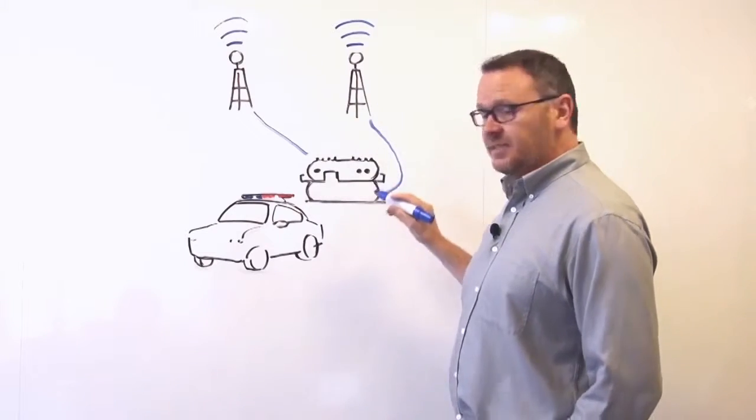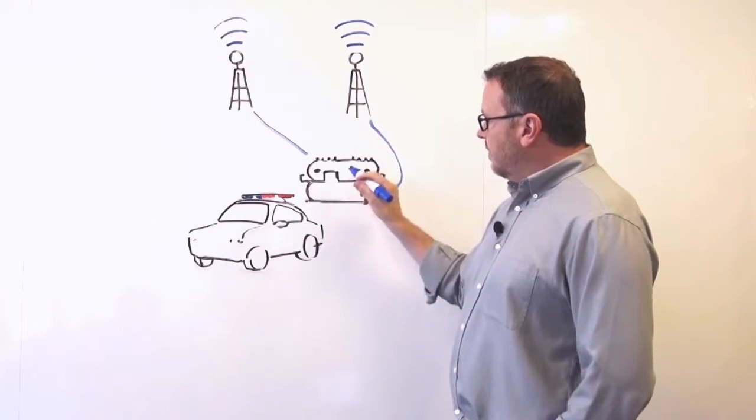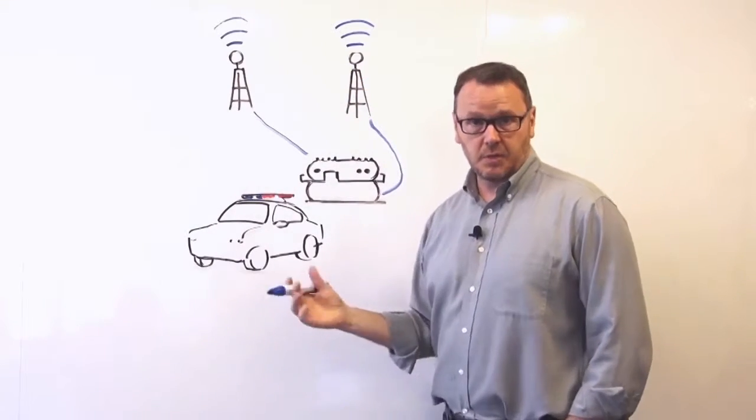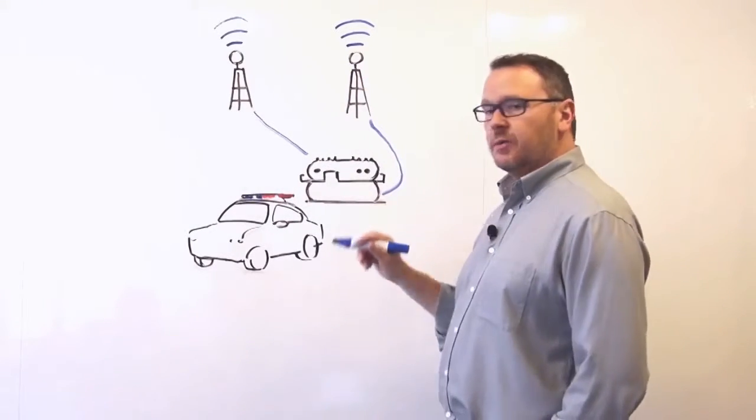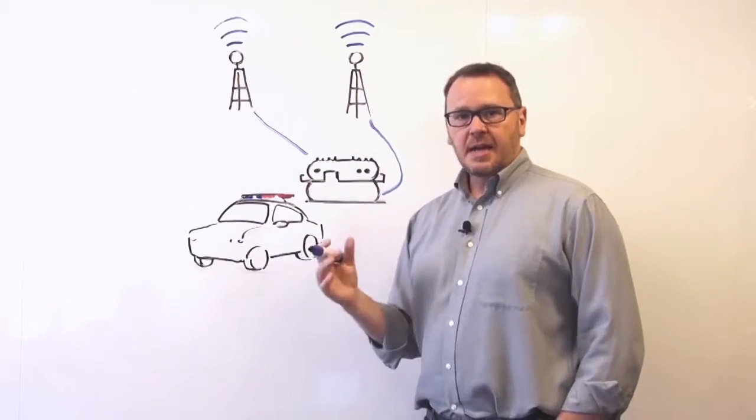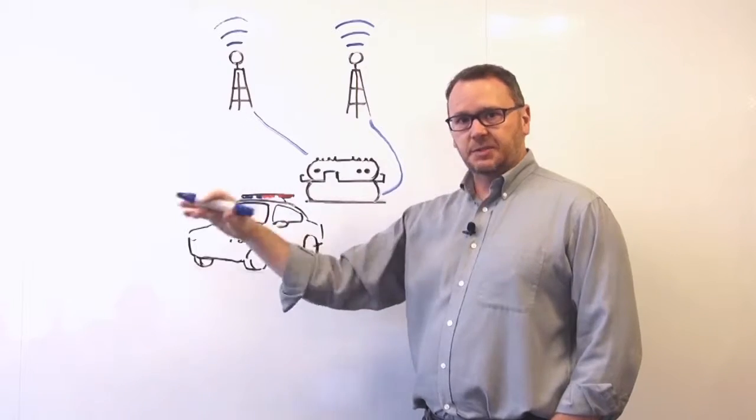As I'm driving around, this would seamlessly fail over to the best quality network. As you're moving around the city, carrier A might be great on the east side, carrier B might be great on the west side, and you have a seamless connection.